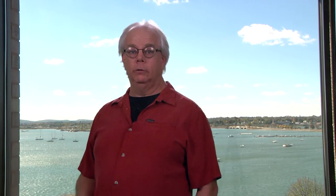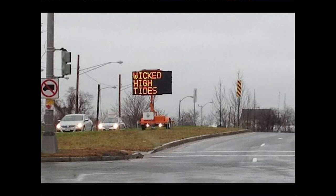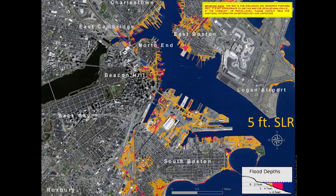Now let's look at the map of flooding during wicked high tide after five feet of sea level rise, projected to occur approximately at the end of the century. Under the high sea level rise scenario, this map shows the twice-monthly wicked high tide in Boston by the end of the century. Another way of looking at this map is that it approximates today's current 100-year flood. On this map, you can start to see flooding in areas of the city that were created by historical landfilling.